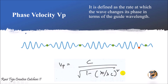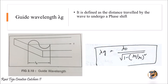The guide wavelength λg is defined as the distance traveled by the wave to undergo a phase shift. Consider a waveguide with a microwave signal propagating in the z-direction. As the wave travels along z, it undergoes a phase shift, which is referred to as the guide wavelength λg.